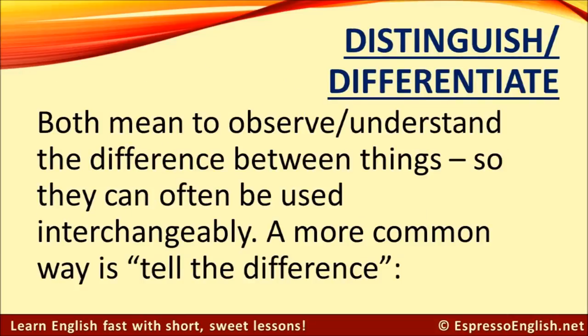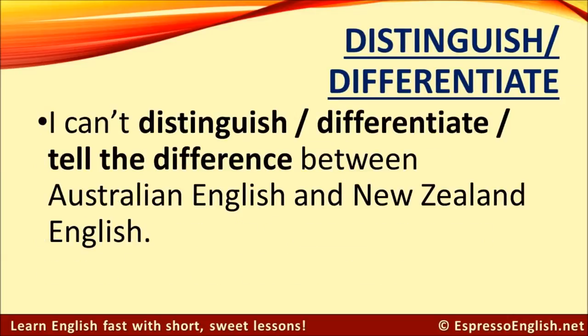Finally, let's look at distinguish and differentiate. Both of these words mean to observe or understand the difference between things, and they can often be used interchangeably. In casual spoken English, a more common way to express this is "tell the difference." For example, I can't distinguish between Australian English and New Zealand English — or you could say I can't differentiate — but it's most common to say I can't tell the difference. All three can be used here, and they're all correct with the same meaning.